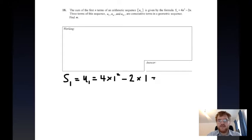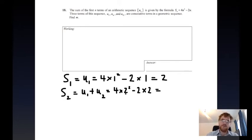If I work out the sum of the first two terms of the sequence, that's going to be equal to u1 and u2 added together. If we put 2 into here we get 4 times 2 squared minus 2 times 2, and that's going to equal, well, 2 squared is 4, 4 times 4 is 16, 16 minus 4 is equal to 12.